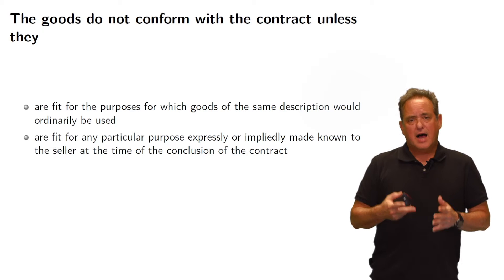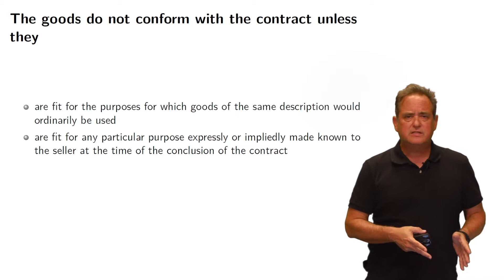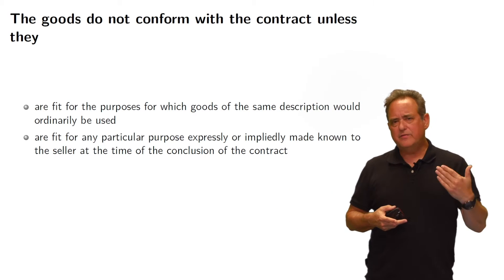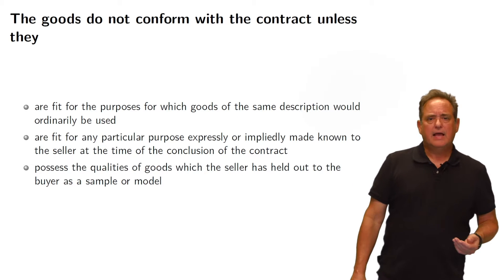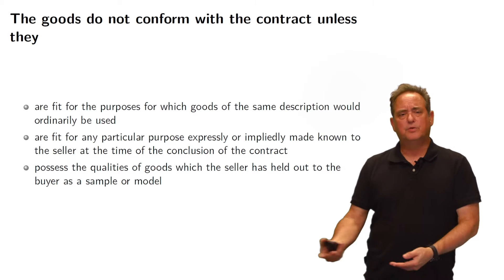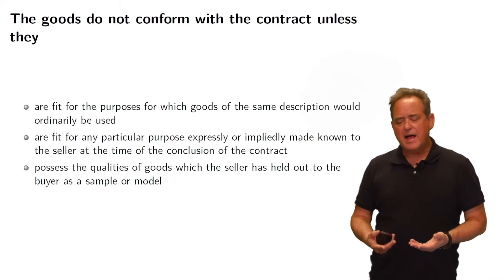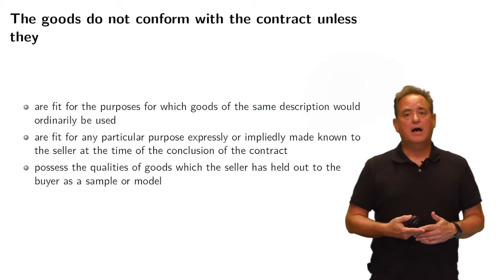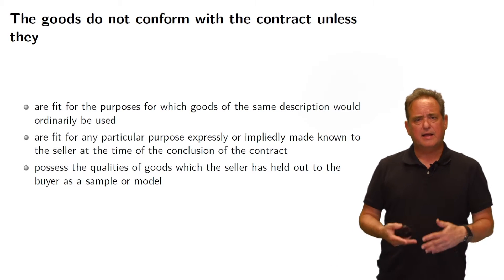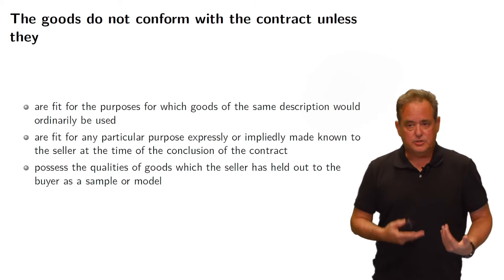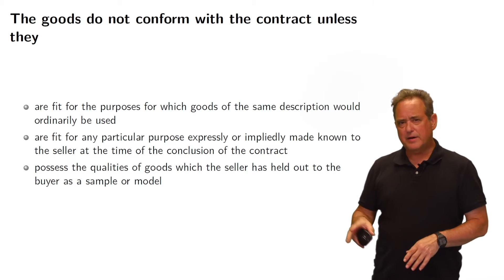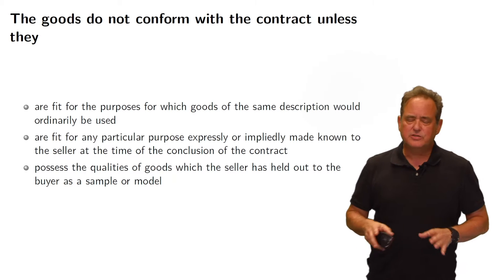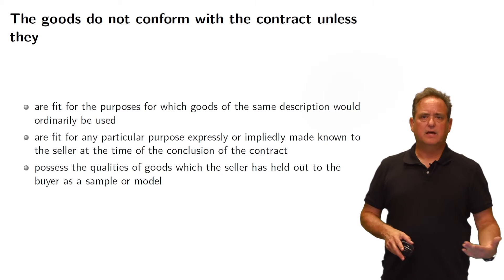If the seller sells ordinary monitors that would be fine for typical TV use but don't meet this advanced purpose, those monitors are not conforming — that is warranty for a particular purpose. Finally, if a seller has provided a sample to the buyer, the actual product must match the qualities of the sample. For instance, if a seller is selling fabric and provides a fabric sample, the delivered goods must match the quality of that sample. Even if the delivered fabric is merchantable, unless it matches those same qualities, it is not conforming under the CISG.